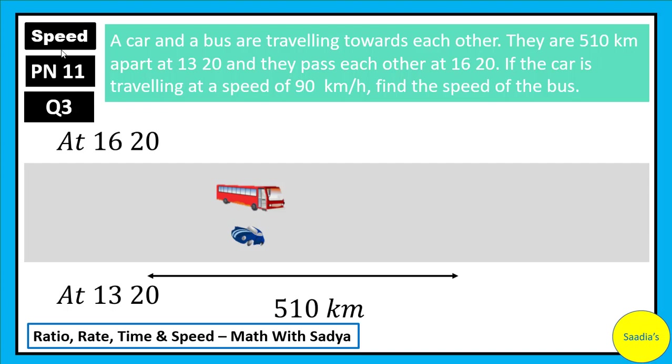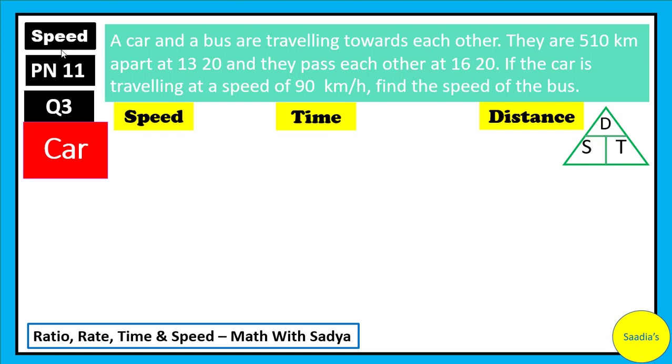There are two quantities, a bus and a car. Let's look at the information for the car first. For the car, they have given us the speed which is 90 km per hour. The time which the car takes to move from one point to the other, can you guess? They started observing at 1320, 13 hours and 20 minutes, and the bus and car pass each other at 1620. How much time has elapsed? It is 3 hours. The time taken by the car is 3 hours.